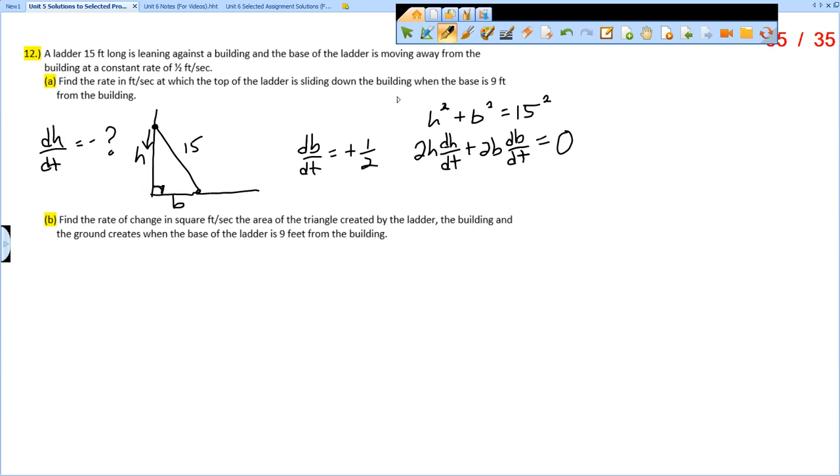Now we plug in our known quantities. We were told to find dH/dt when the base is 9 feet from the building, so that would be B equals 9. If B is 9, you need to find H, so H squared plus 9 squared equals 15 squared. H is 12.